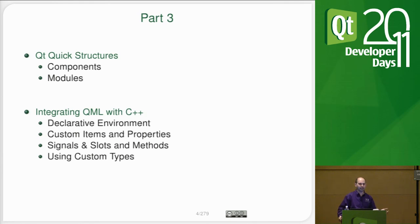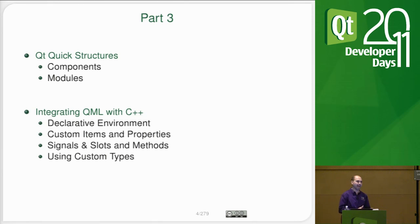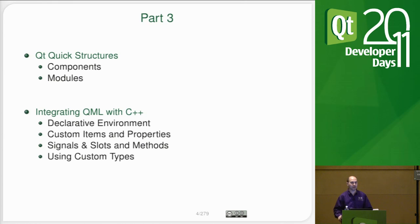And finally we're going to talk about integrating QML with C++ — how to use C++ objects in QML and how to allow QML items to have C++ backends where the user of your QML module might not even know that it has C++ in it or whether it's written in JavaScript. We'll talk about the different approaches because there are actually three or four different ways to get your C++ and your QML talking together.